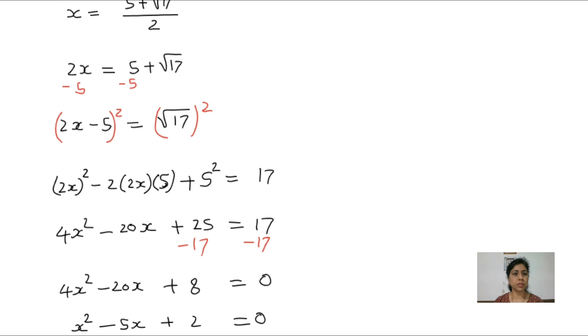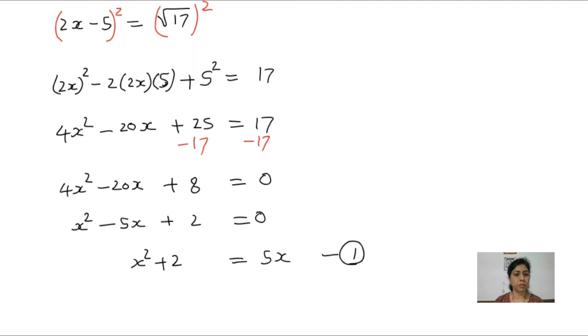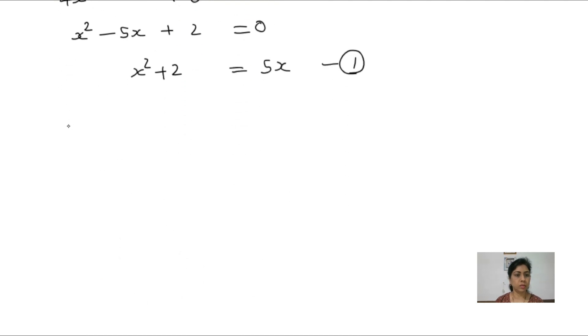Now what is our given condition? This one, right? x to the power 4 minus 21x square plus 17. We can substitute here values, but before substitute we have to manipulate this.